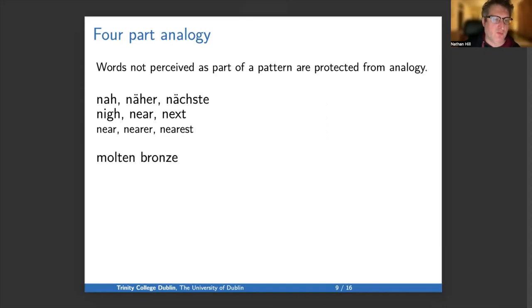To take another example, we have molten bronze, where molten exists as an adjective, even though, as a past participle, it has been replaced with melted. And similarly, we can have the phrase cloven hoof, where the past participle cloven is preserved in this fixed expression, even though the past participle productively has been replaced with cleaved. That's all I have to say about four-part analogy, and now I move on to contamination.